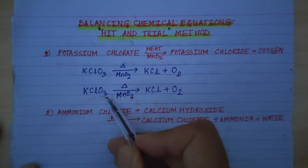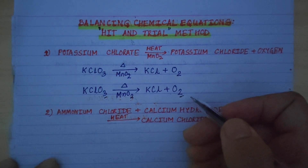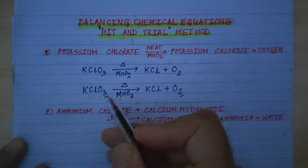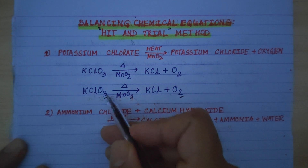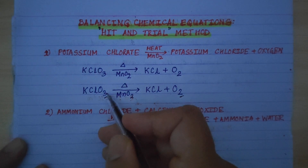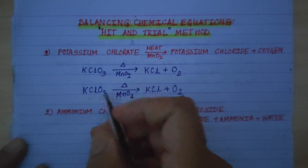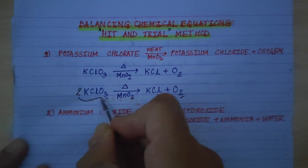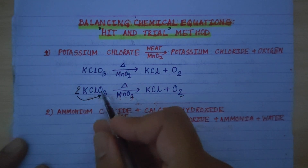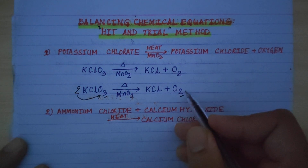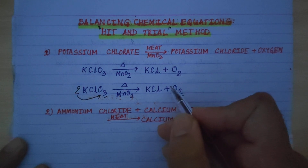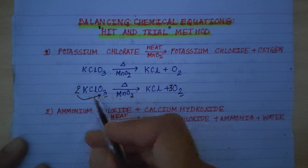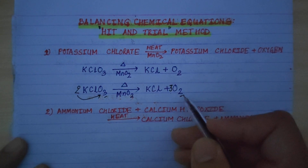Oxygen on the reactant side is 3; on the product side it is 2. In this case oxygen is not balanced. The number is odd versus even. To balance, we need to add a coefficient. We multiply: 2 times 3 gives 6. So oxygen on the reactant side becomes 6. We place coefficient 3 in front of O2 on the product side — 3 times 2 equals 6. Now both sides have 6 oxygen atoms — oxygen is balanced.